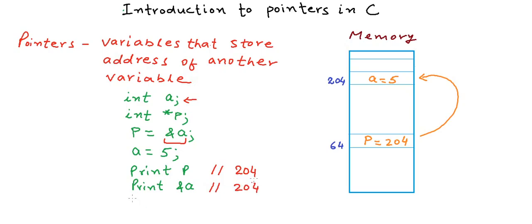What if we want to print ampersand of P? Now P is also a variable and it is also stored in the memory. So ampersand, since it gives you the address of that variable, printing ampersand of P should give us 64, which is the address of P.